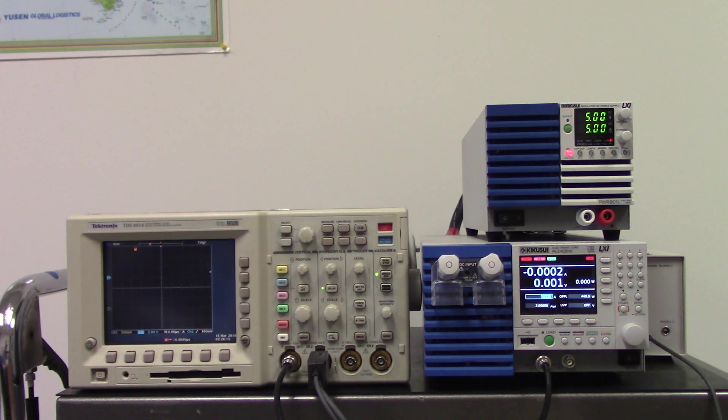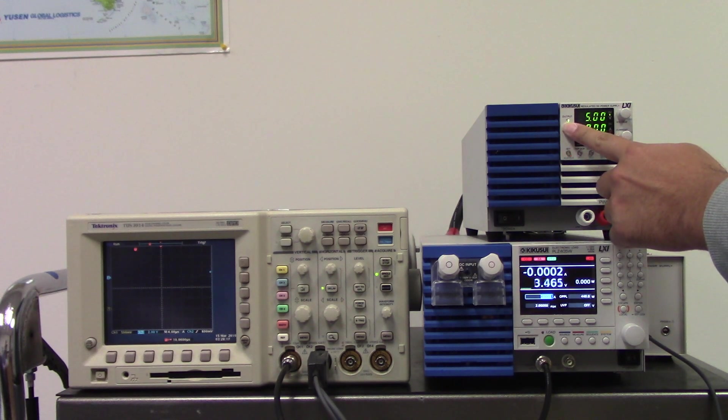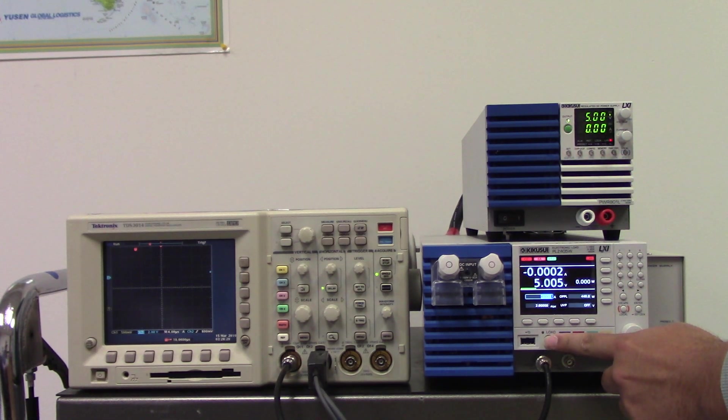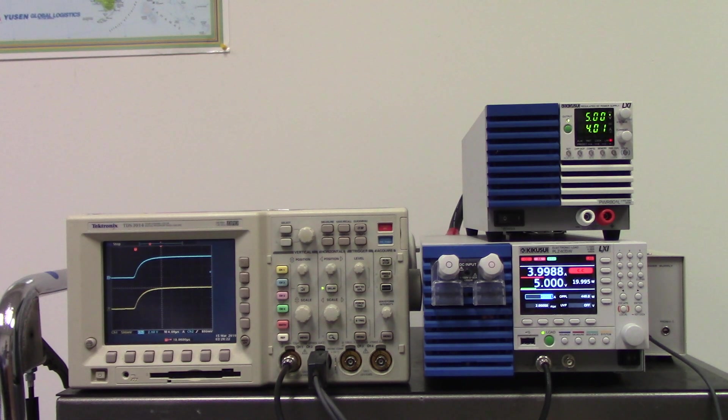Now we will press the output on the DC power supply. Next we press the load button on the electronic load. You can see the current waves being displayed on the oscilloscope.